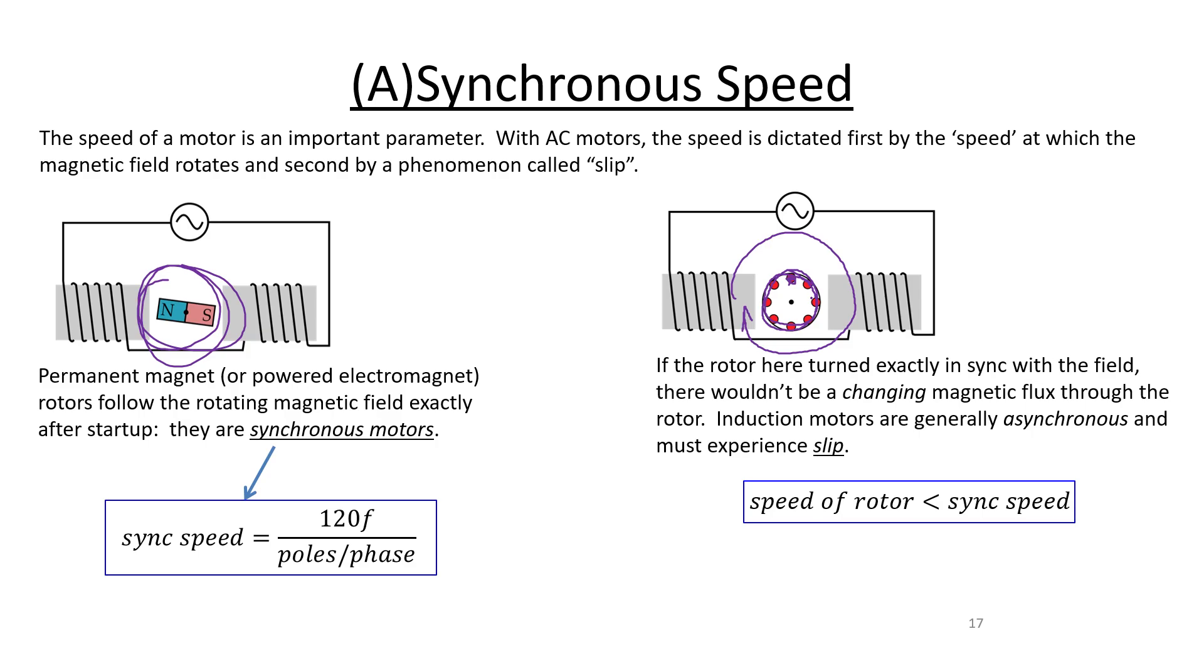So what we say is that induction motors are asynchronous, so not synchronous, and they experience slip. So slip can be expressed a number of different ways, either as RPM, like a number of RPM behind the rotation of the magnetic field around the stator. In other words, the sync or synchronous speed. Or you can represent it as a percentage of the synchronous speed. A lot of different ways to do it.